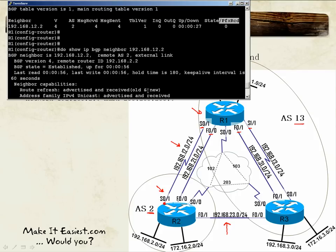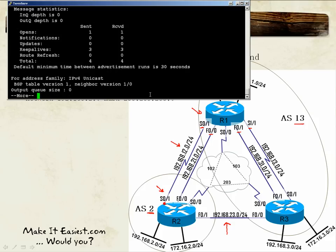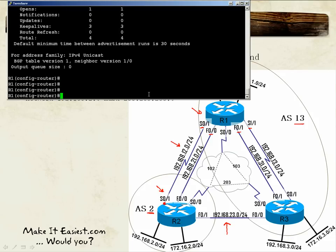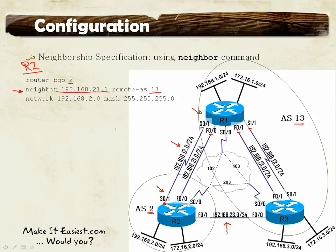Up until now I only configured the neighbor relationship between Router 1 and Router 2 — I have not configured either router to advertise anything. To inject routes into BGP, we use the network command, similar to IGPs like OSPF and EIGRP, but it works slightly differently.